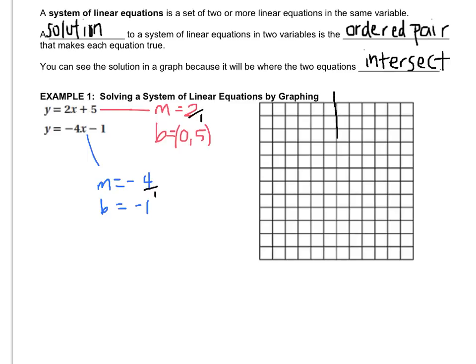So let's make an x-y grid and graph the two lines. So first I'll graph the first equation. I'm going to make a dot at (0, 5). And I can't go up 2, one to the right, so I'll go down 2, one to the left. And that creates the same line, and the more points I have, the more accurate my line is.